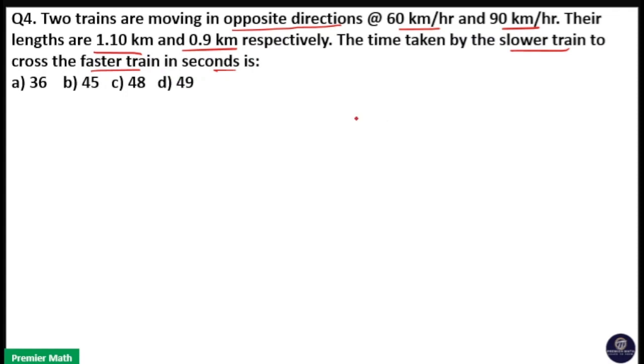Here two trains are running in opposite directions, one with speed 60 km per hour and the other at 90 km per hour. One length is 1.1 km and the other is 0.9 km. We need to find the time taken in seconds for the slower train to pass the faster train.